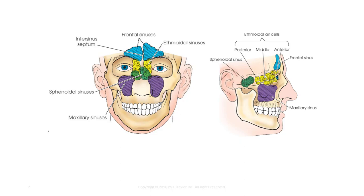Development begins in fetal life, as the maxillary sinuses are usually the only ones developed to be demonstrated radiographically at birth. By 6–7 years of age, the frontal and sphenoid sinuses are distinguishable from the ethmoids.